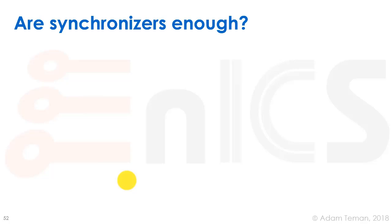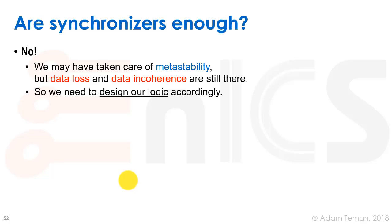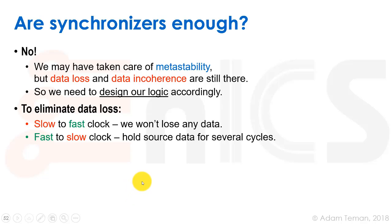But is a synchronizer enough? Obviously not. We've taken care of metastability, but data loss and data incoherence remain. We need to design our logic to ensure data takes at least two clock cycles to pass between domains. We also need to consider whether we're going from a slow clock to a fast clock or a fast clock to a slow clock, as these cases differ.